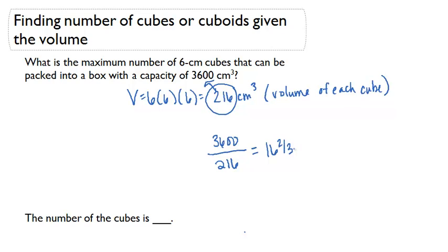So we want to know the maximum number of cubes that can be packed in. Well, the maximum number would be 16 because a 17th cube cannot be packed in. So 16 6-centimeter cubes can be packed into a box with a capacity of 3,600 cubic centimeters.